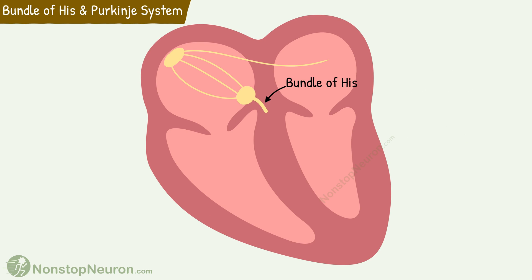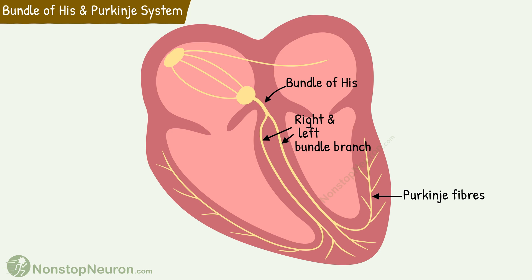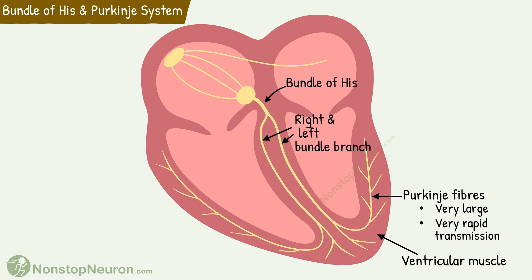After the AV node, we have the bundle of His, which passes downwards in the ventricular septum towards the apex of the heart. The bundle then divides into right and left bundle branches, and each bundle branch progressively divides into Purkinje fibers. Purkinje fibers are very large fibers — transmission through them is so rapid that once the impulse enters the Purkinje system, it spreads almost immediately to the entire ventricular muscle mass. This speed is believed to be due to a high number of gap junctions between the cells of the Purkinje fibers. The fibers stimulate the ventricular muscles in direct vicinity, while the remaining muscle cells are activated by the ventricular muscle cells themselves. Due to the fibrous ring, the impulse does not travel back into the atria.